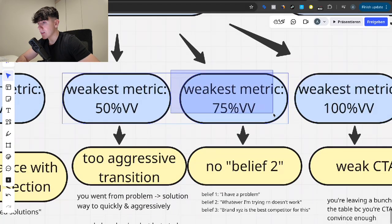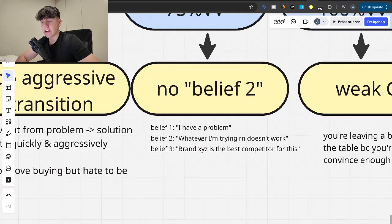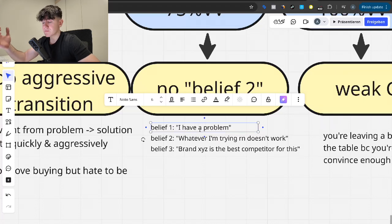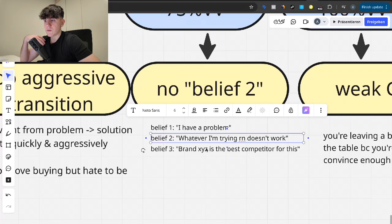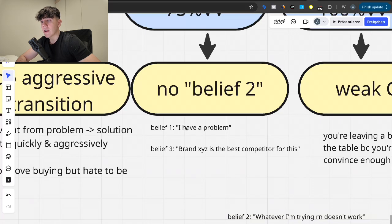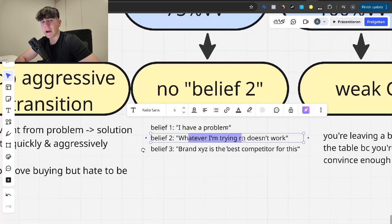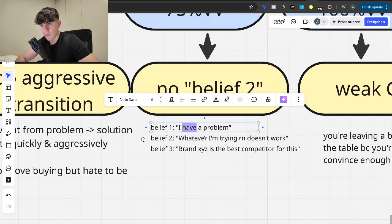If the 75% video views is your weakest metric right now, you literally have no belief in your ad or not strong enough. So the three beliefs that you need to understand that you change in every single ad are, first of all, you make people believe that they have a problem. They think I have a problem. Belief two is that they think whatever I'm trying right now is not going to get me to my goal. It doesn't work. I have to switch solutions. I'm open towards new solutions. And then belief three is brand XYZ is the best competitor for this. You know what's crazy though? Most people writing copy, skip belief two.